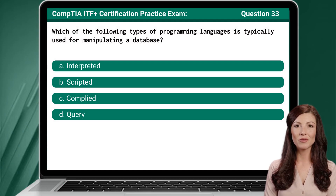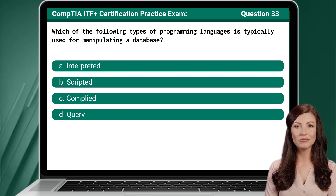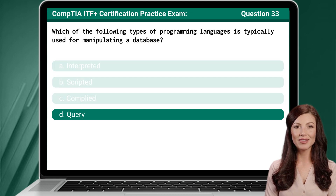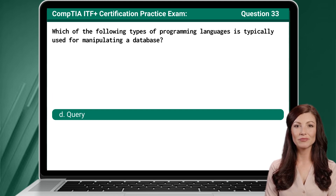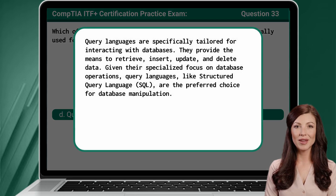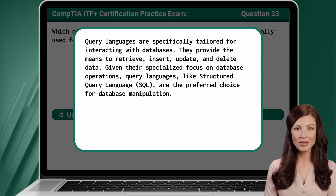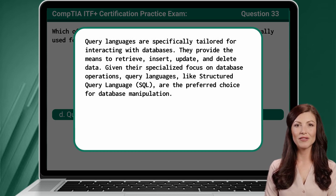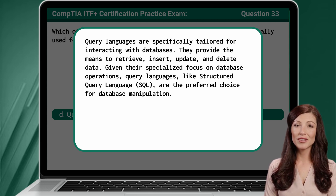Question 33. Which of the following types of programming languages is typically used for manipulating a database? The answer is D: Query. Query languages are specifically tailored for interacting with databases. They provide the means to retrieve, insert, update, and delete data. Given their specialized focus on database operations, query languages like Structured Query Language (SQL) are the preferred choice for database manipulation.